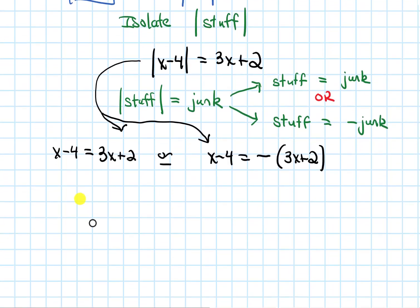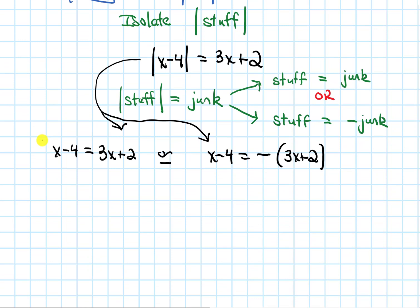Let's solve these. With the first equation, I move the 2 to the left to get minus 6, and move the x to the right to get 2x. Dividing by 2, we get x equals negative 3. So that's one possibility.